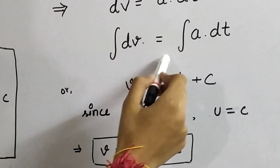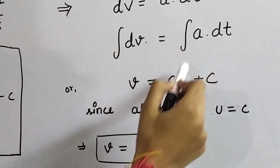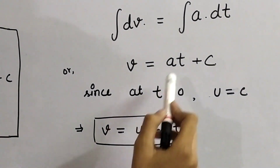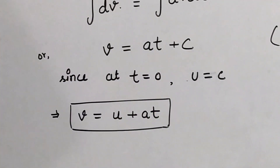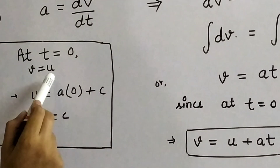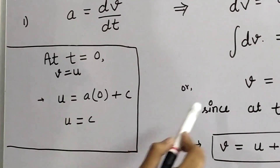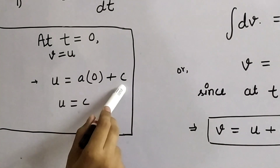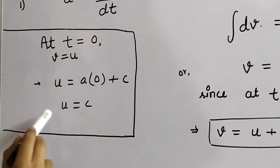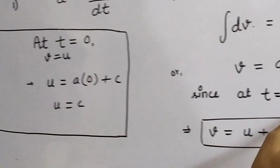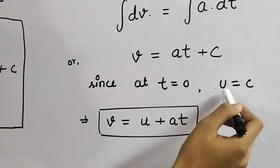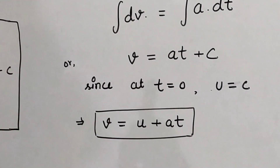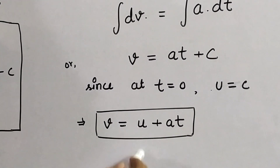Integrating this equation on both sides, we get the integral of dV = integral of A dt. The integral of dV is V, and since A is a constant, it comes out of the integral, and the integral of dt gives T, plus C as the constant of integration. Now, at t = 0, V = U because it is the initial velocity. Putting T = 0 in this equation, we get U = A(0) + C, so U = C. Substituting U in place of C, we get V = U + AT. In this way, our first equation is derived.